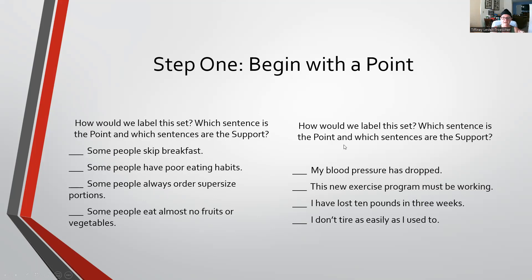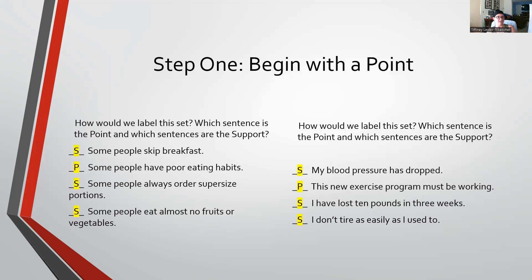Let's try this one: 'My blood pressure has dropped,' 'This new exercise program must be working,' 'I have lost 10 pounds in three weeks,' 'I don't tire as easily as I used to.' When we look at the sentence 'this new exercise program must be working,' it becomes clear that the reason she knows the program is working is because her blood pressure has dropped, she's lost 10 pounds in three weeks, and she doesn't tire as easily. So that second sentence is the point, and the other three are the support — which is indeed the case for both examples.